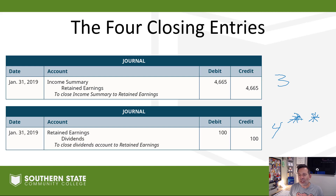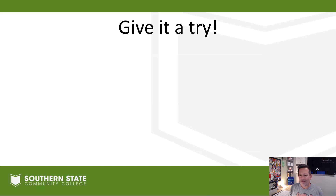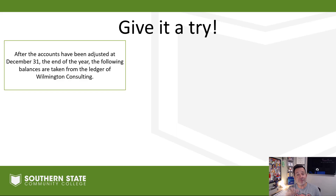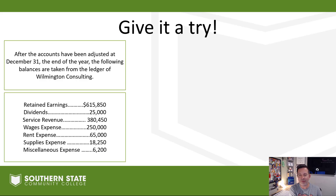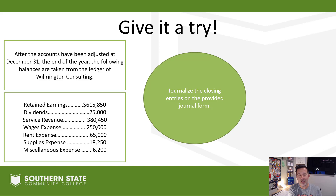Now give it a try. After accounts have been adjusted as of December 31 — the end of the year — the following balances are taken from the ledger of Wilmington Consulting. Journalize the four closing entries for that information. I'll provide a journal template — write it out by hand. We'll pause the video and let you try, then come back and show you the correct answer.